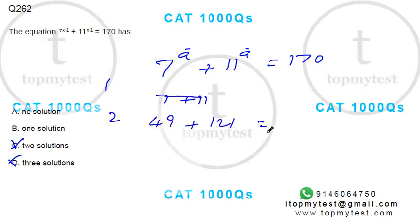If I put 2, you'll get 49 plus 121, which is 170. That's the only solution possible. Option B is your correct choice. That finishes this question.